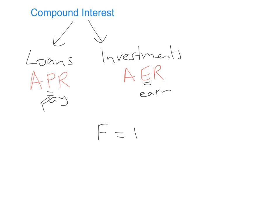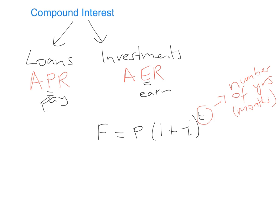The formula is: F equals P multiplied by (1 plus i) to the power of T. T — which I sometimes refer to as N — is basically the number of years, or sometimes months depending on the question, but generally it represents time. It's not about just looking in your formula tables; you need to understand what each section means.